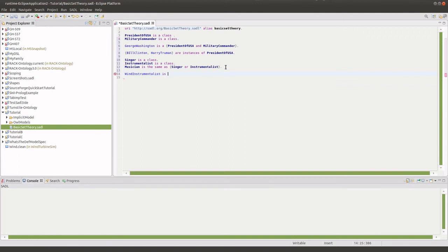Next, we're going to define the wind instrumentalist class as a subclass of instrumentalist or as a type of instrumentalist. And having defined the wind instrumentalist class, we're going to state that singer and instrumentalist, these two classes are disjoint, meaning that an instance cannot belong to both classes. The idea being that you can't sing and blow on a wind instrumentalist at the same time.